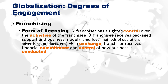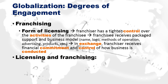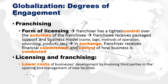Franchising is similar to licensing but the franchisor maintains tighter control over the franchisee's activities. For example, McDonald's as a franchisor can sell its business model to a franchisee in China. The franchisee receives a package of support — a ready-to-go business in a box including the name, logo, methods of operation, and marketing power. In exchange, the franchisor receives a financial commitment, some percentage of what the franchisee makes, plus control over how the business is conducted, so it remains a replicable packaged model.